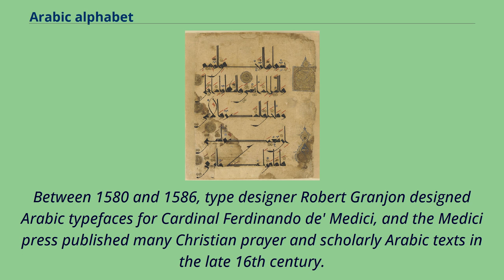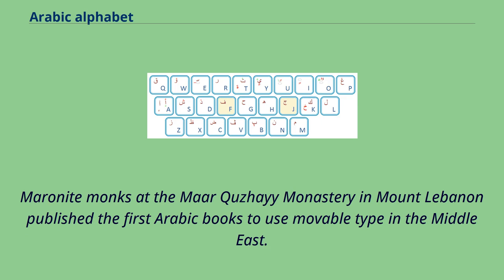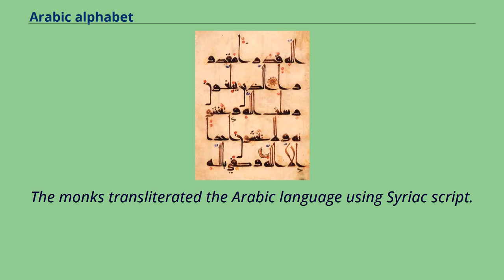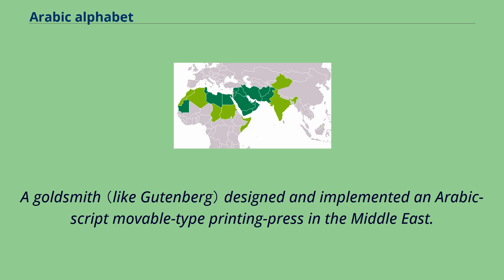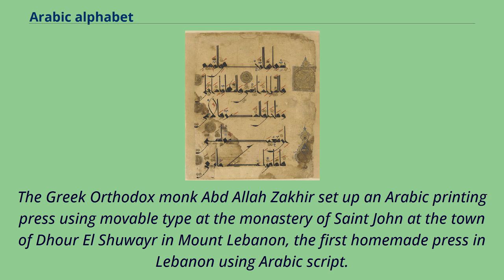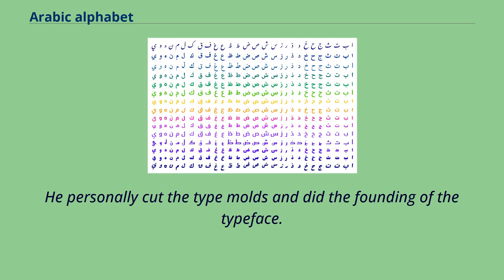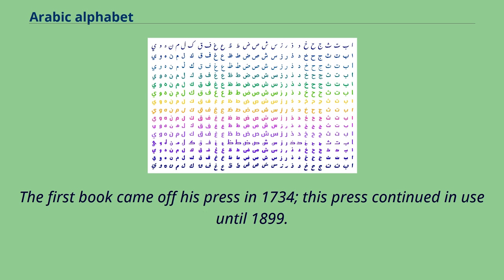Between 1580 and 1586, type designer Robert Granjon designed Arabic typefaces for Cardinal Ferdinando de Medici, and the Medici press published many Christian prayer and scholarly Arabic texts in the late 16th century. Maronite monks at the Monastery in Mount Lebanon published the first Arabic books to use movable type in the Middle East. A goldsmith later designed and implemented an Arabic-script movable type printing press. The Greek Orthodox monk Abdallah Zakher set up an Arabic printing press at the Monastery of St. John in Mount Lebanon — the first homemade press in Lebanon using Arabic script — and he personally cut the type molds. The first book came off his press in 1734, and this press continued in use until 1899.